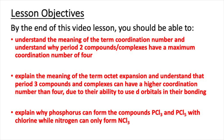And finally, you should be able to explain why phosphorus can form the compounds PCl3 and PCl5 with chlorine, while nitrogen can only form NCl3.